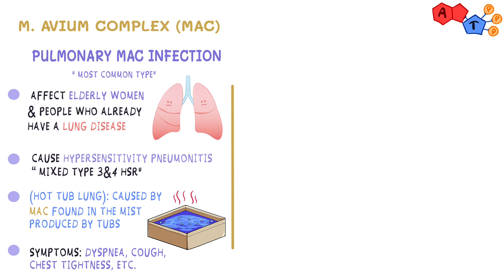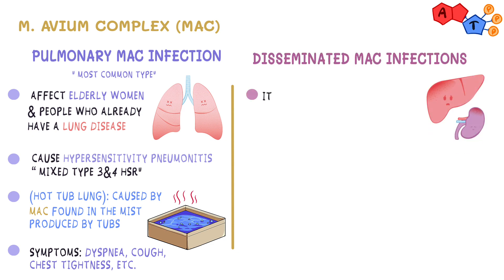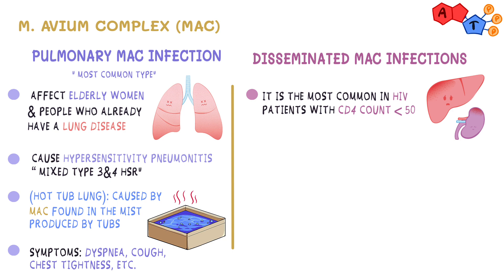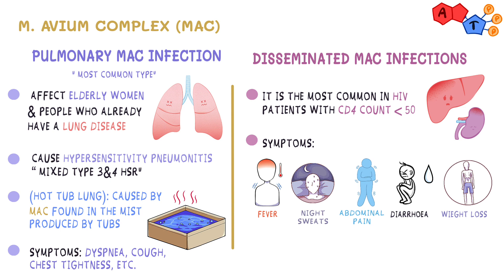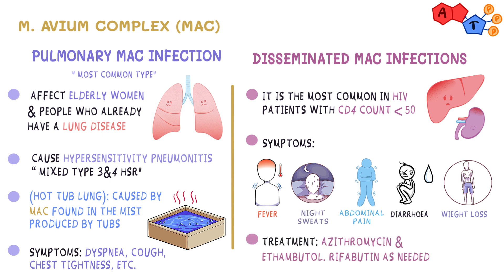The second type is disseminated MAC infection. This usually happens to patients in the late stages of AIDS. It's the most common in HIV patients with CD4 counts less than 50. It causes fever, night sweats, abdominal pain, diarrhea, and weight loss. Disseminated MAC is treated with azithromycin as a prophylactic antibiotic and ethambutol. Rifabutin can also be added as needed.